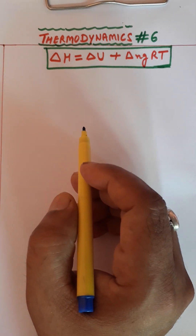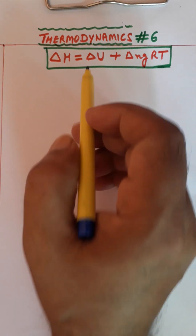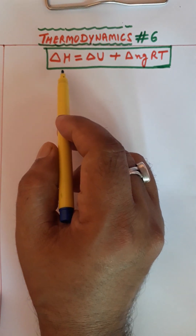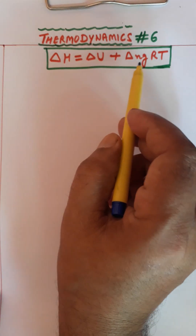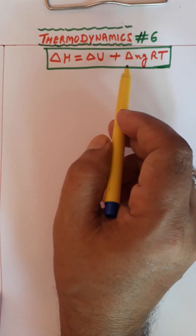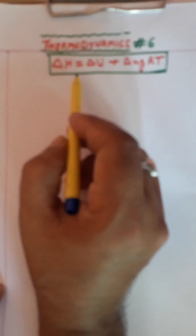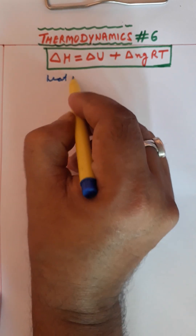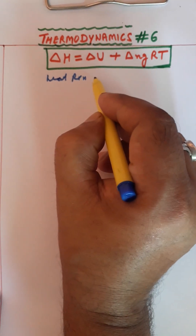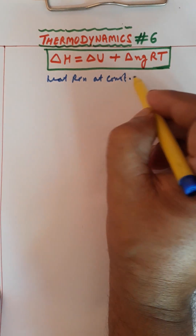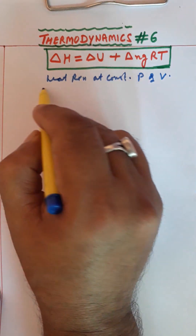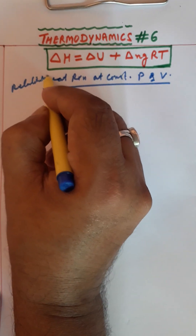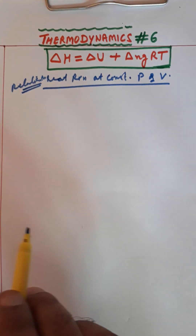Hello, good afternoon students. Today we will discuss Thermodynamics Part 6 — the relation ΔH = ΔU + ΔNgRT, meaning the relationship between heat of reaction at constant pressure and constant volume. आज हम यह relationship करेंगे। इस relationship के बहुत सारे numerical जो है वो आपको exam में आते हैं।